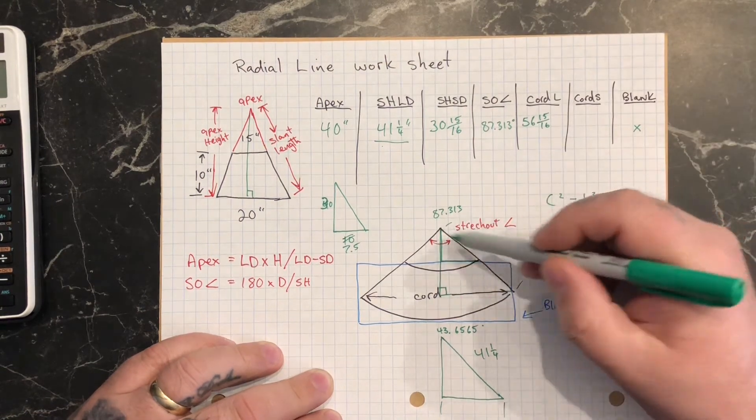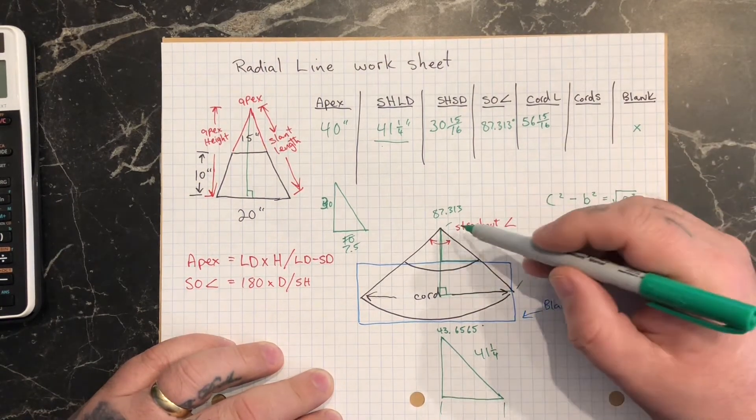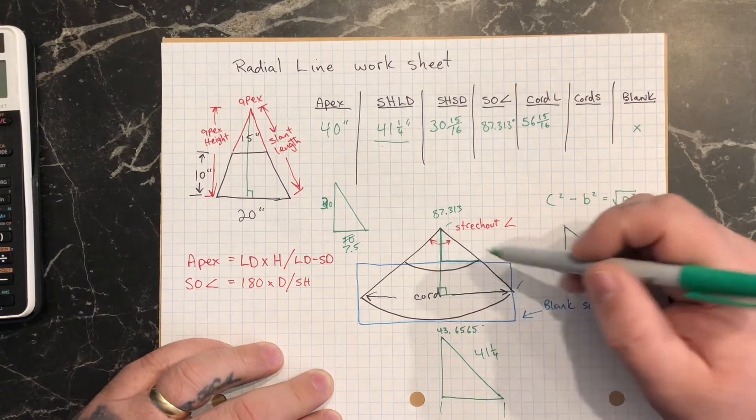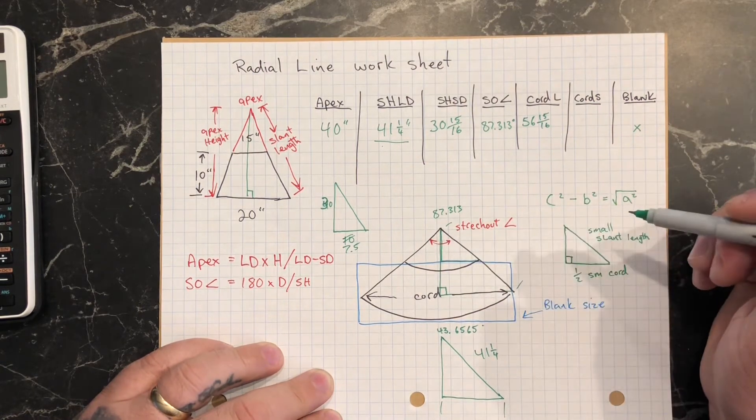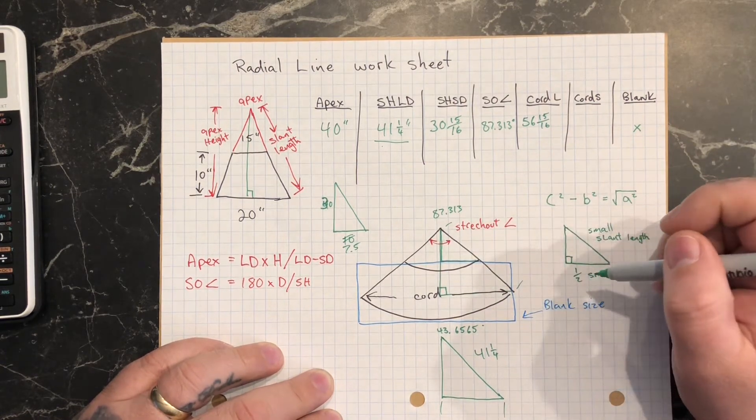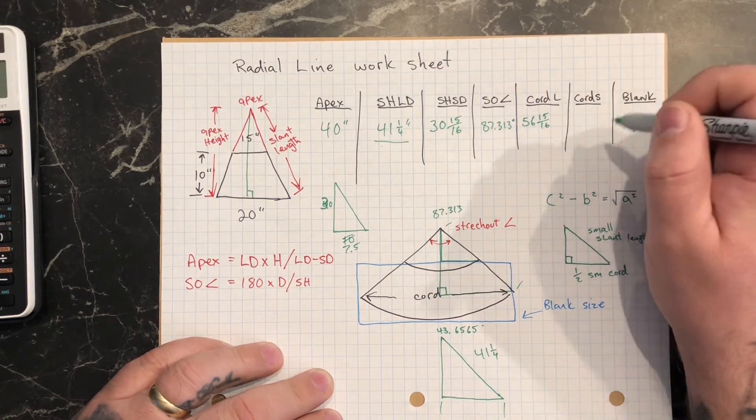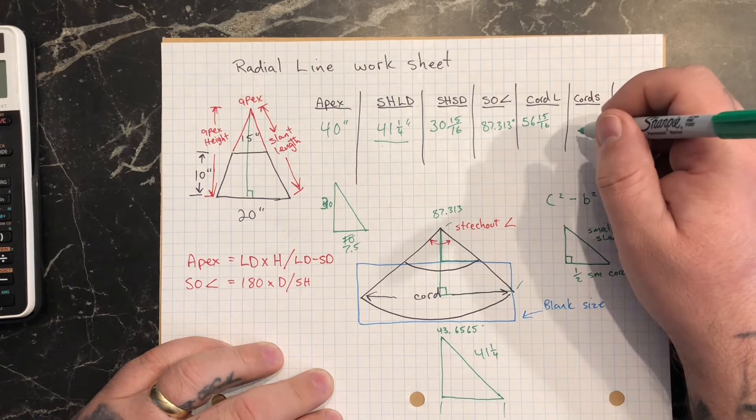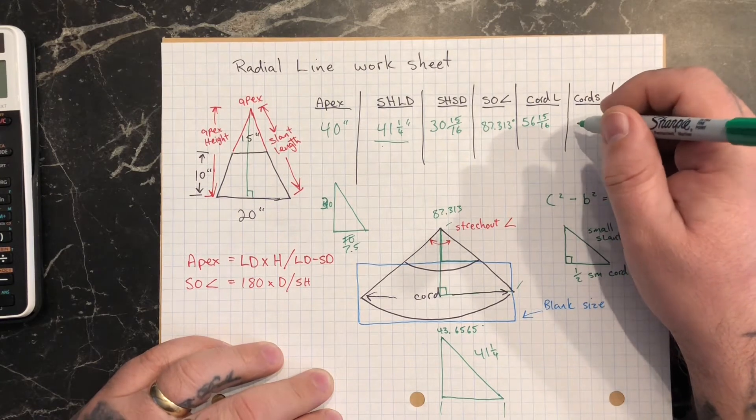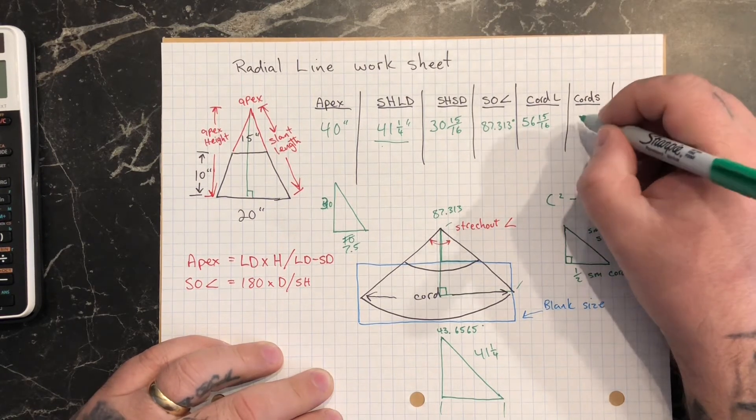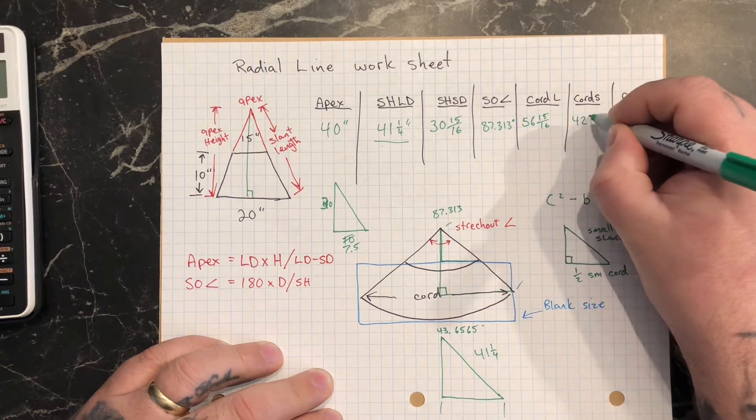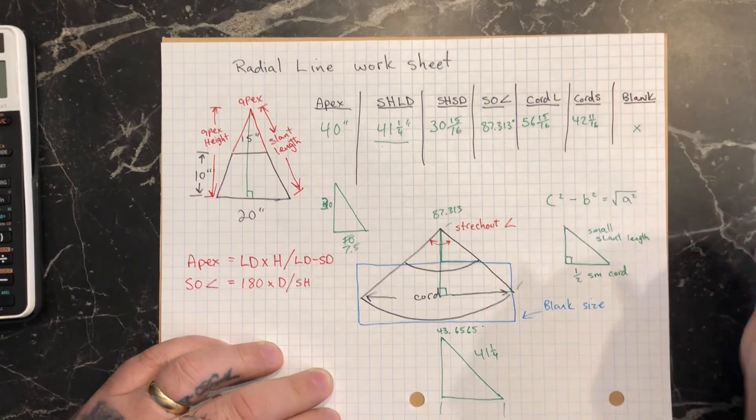And we can do the same math using that same angle but our smaller slant length to figure out the small chord length, which ends up being 42 and 11 sixteenths.